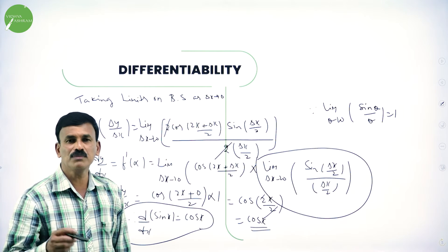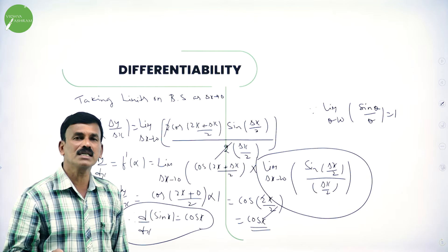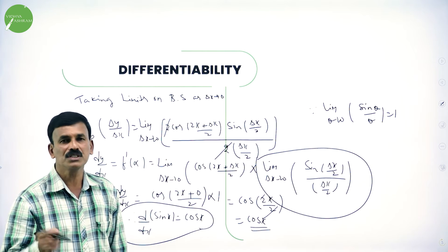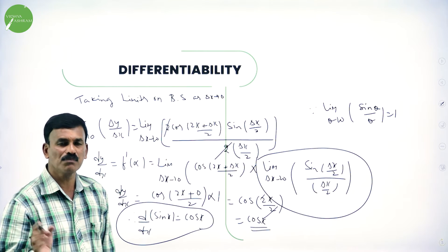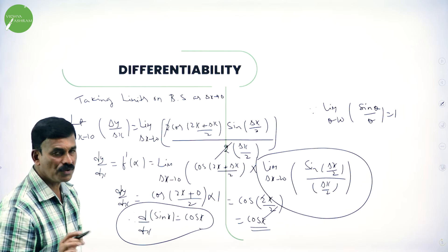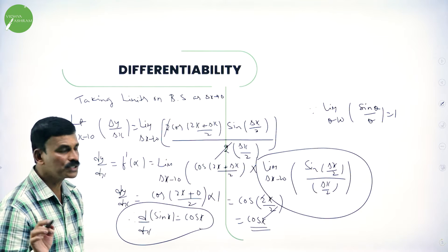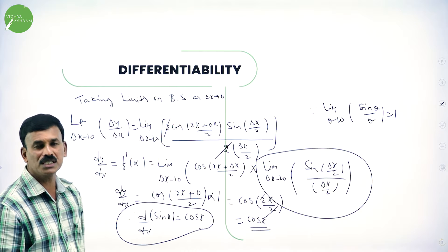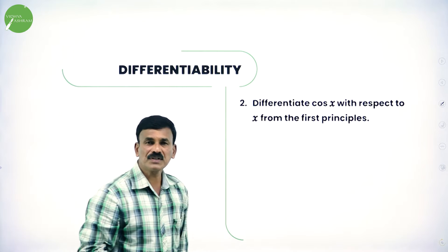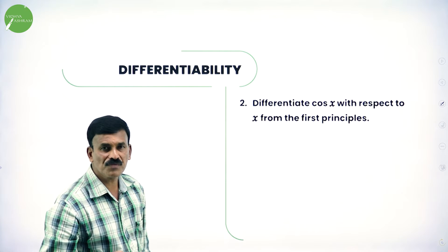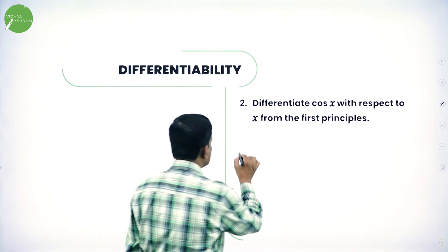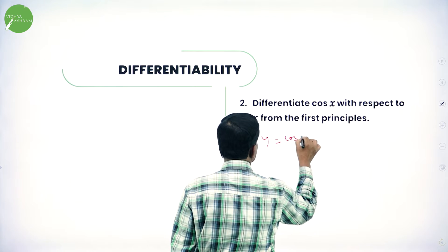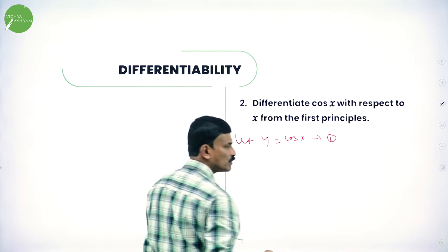The key steps: sin c minus sin d = 2 cos((c+d)/2) · sin((c-d)/2). After simplifying, divide both sides by delta x and take the limit as delta x tends to 0. Apply the limit and you get the answer. This is a very simple concept and very important for examination. Now let us come to a similar problem: differentiate cos x with respect to x from first principle.